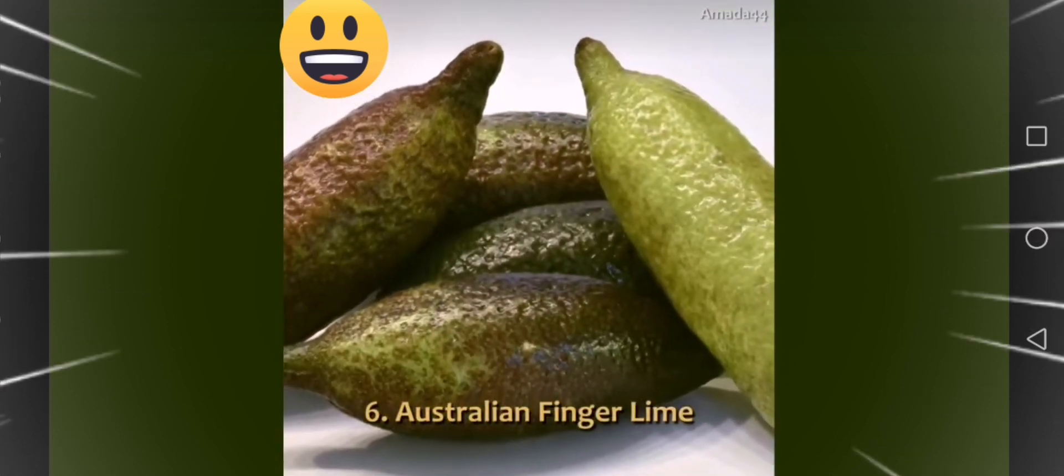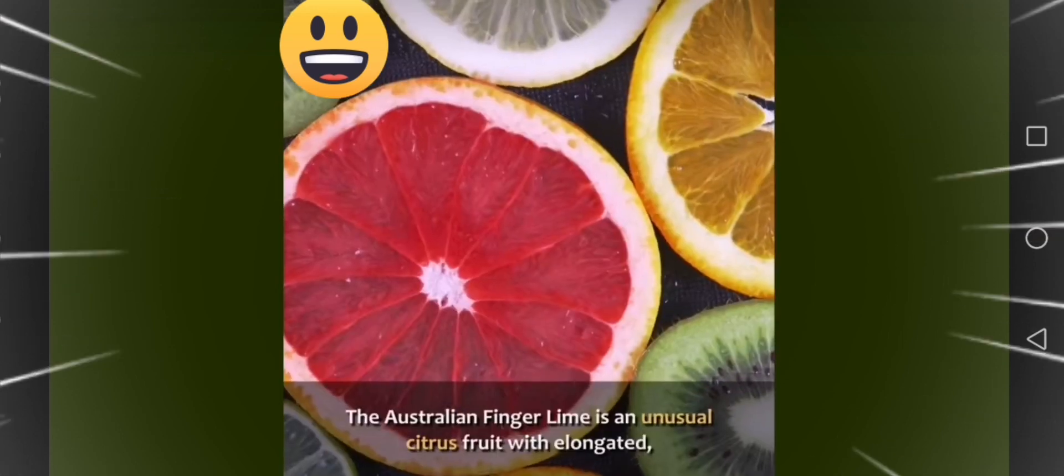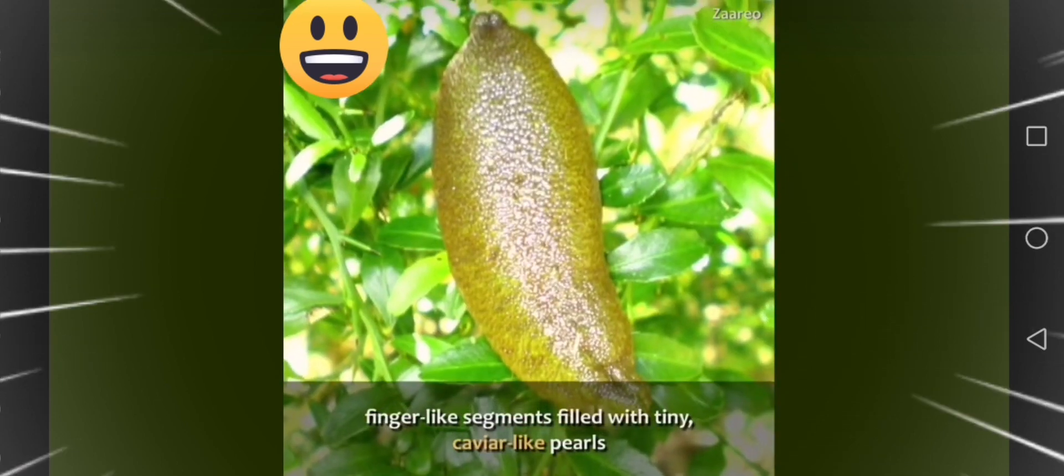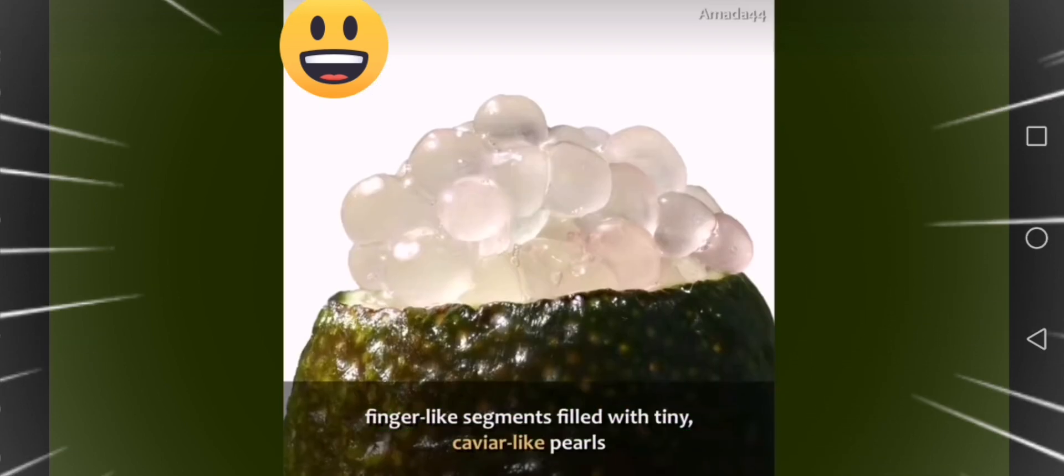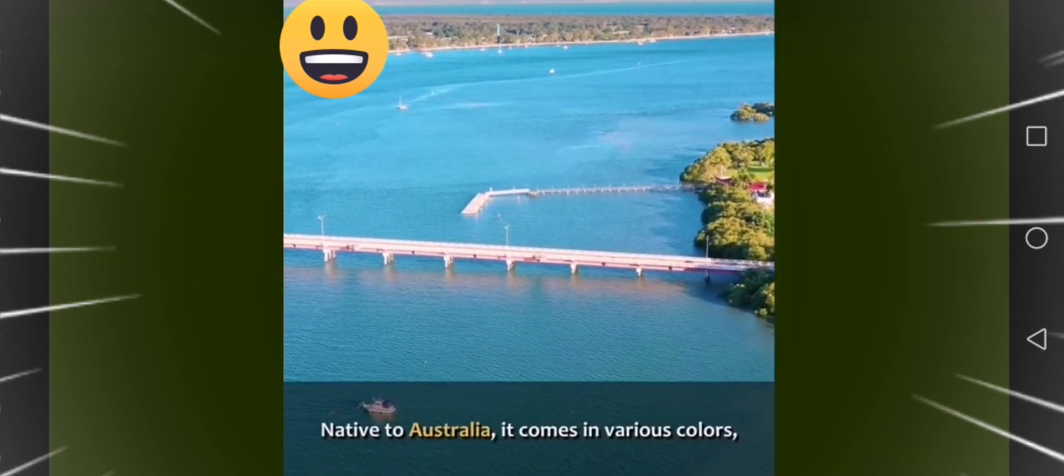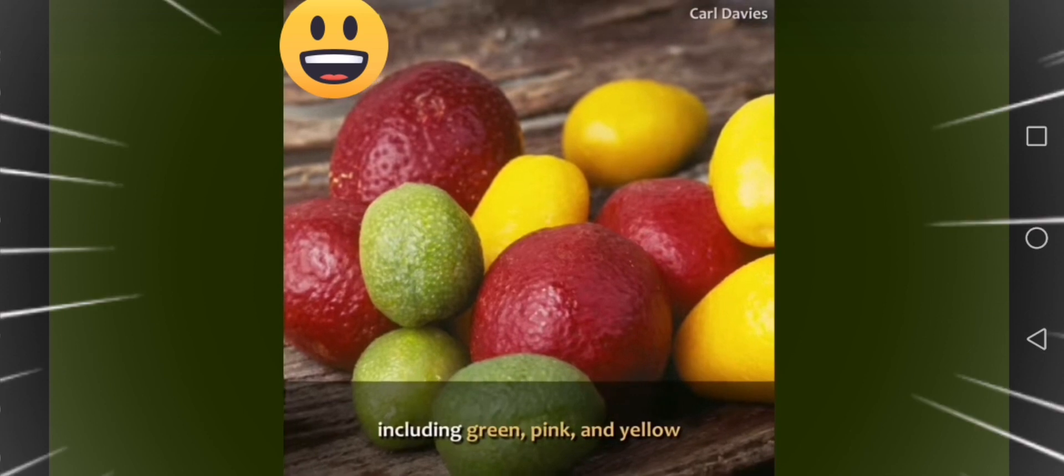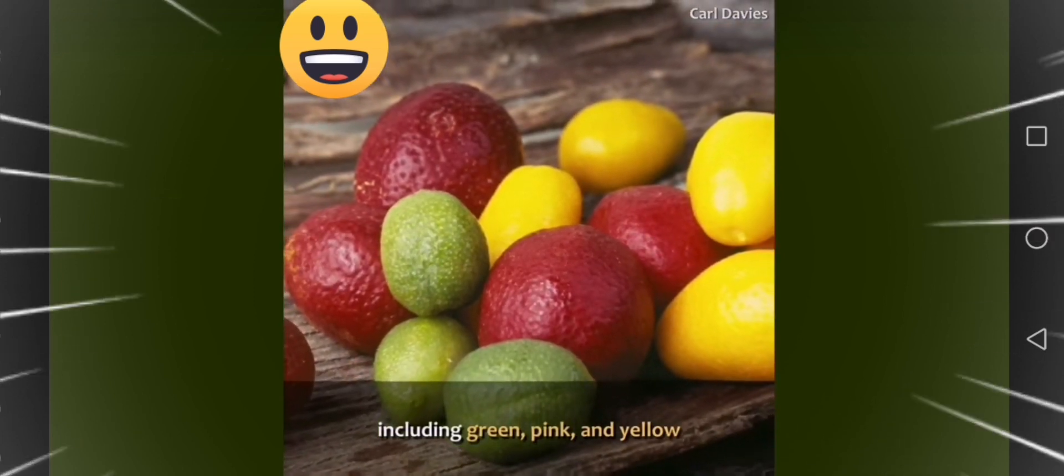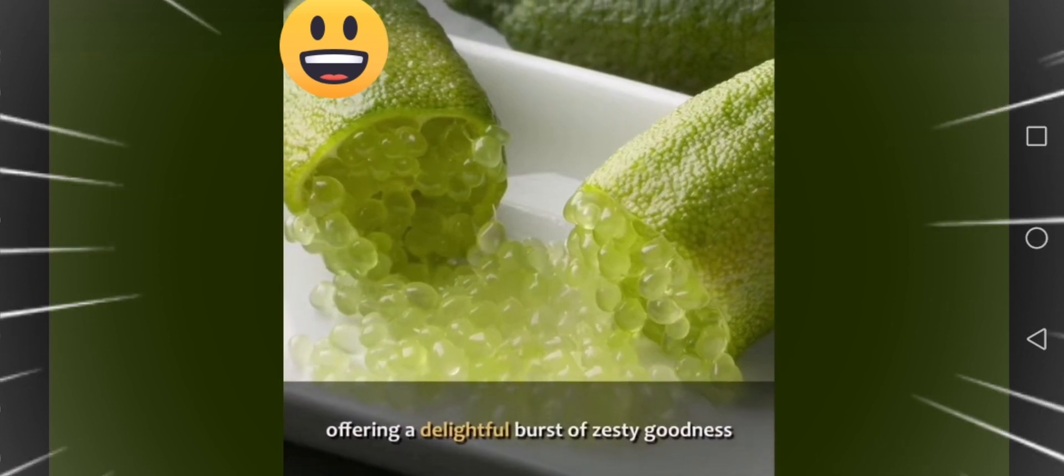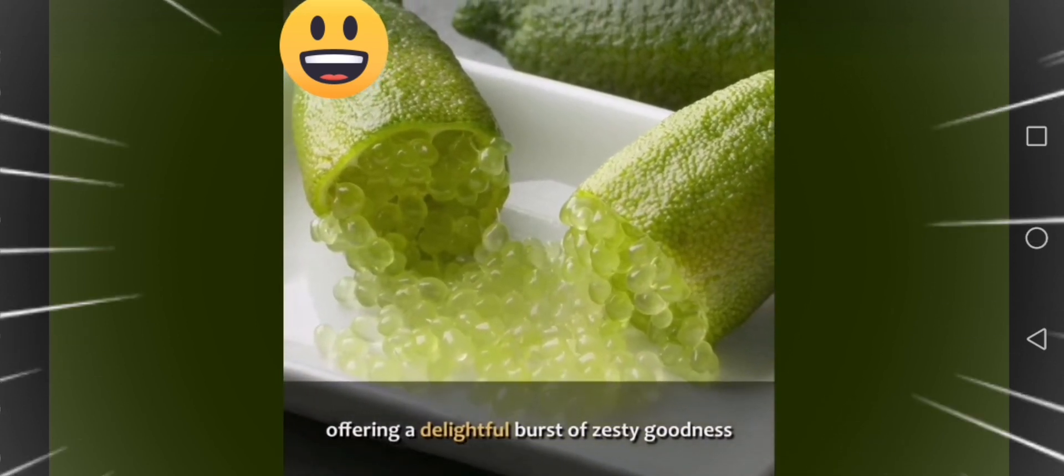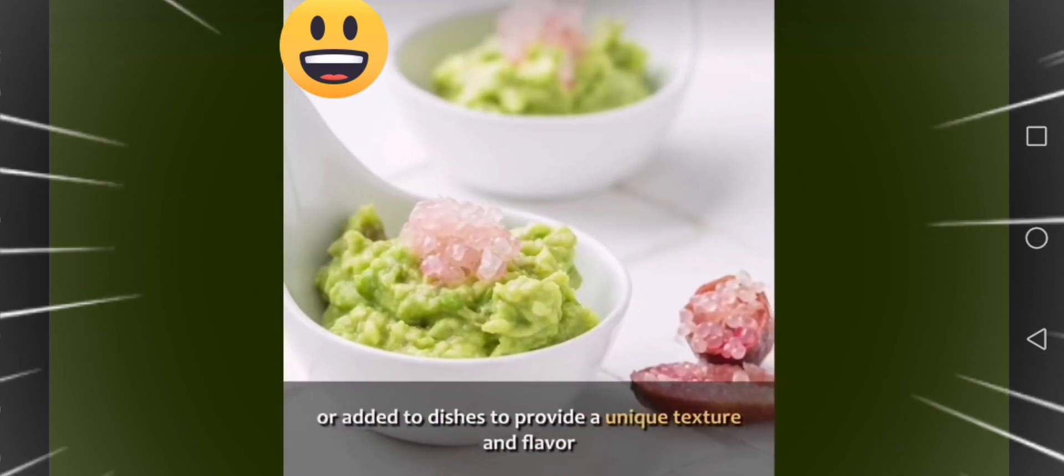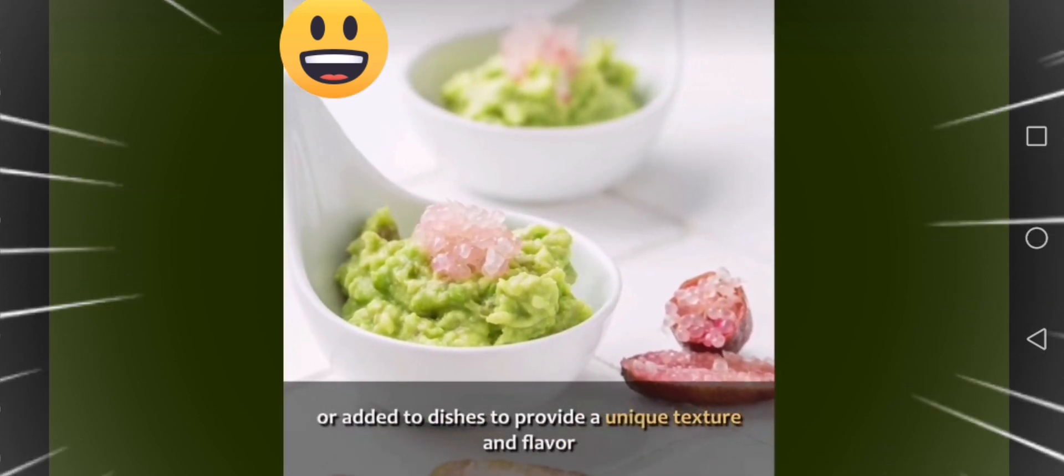Six, Australian finger lime. The Australian finger lime is an unusual citrus fruit with elongated, finger-like segments filled with tiny, caviar-like pearls. Native to Australia, it comes in various colors, including green, pink, and yellow. The pearls burst with tangy citrus flavor, offering a delightful burst of zesty goodness. This fruit is often used as a gourmet garnish or added to dishes to provide a unique texture and flavor.